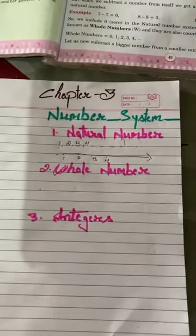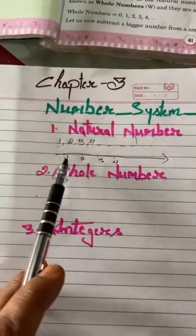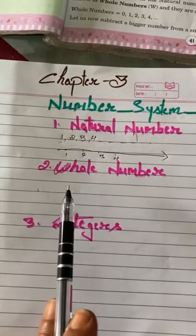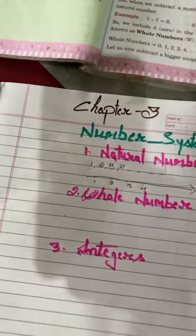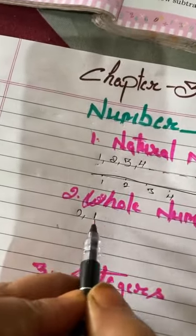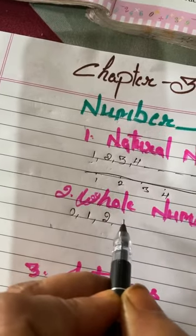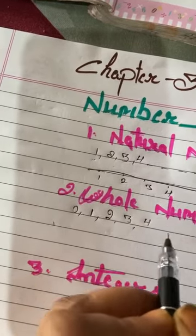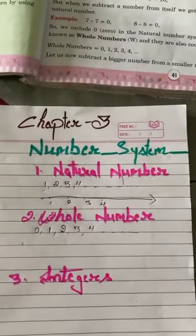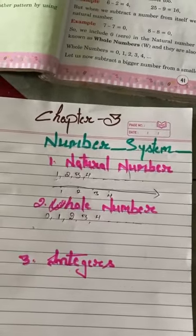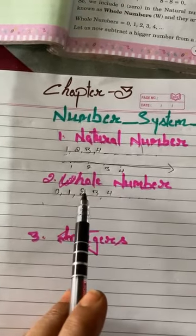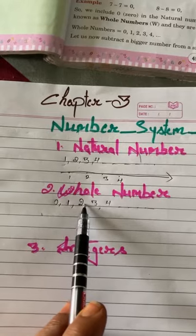Now come to the next number — whole number. The natural numbers together with 0 are known as whole numbers. 0, 1, 2, 3, 4 and so on. So all the natural numbers together with 0 are known as whole numbers.